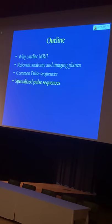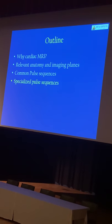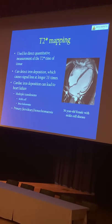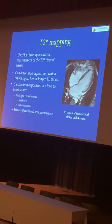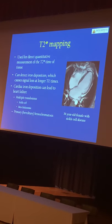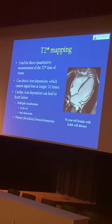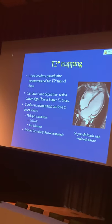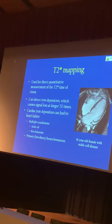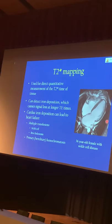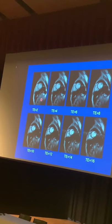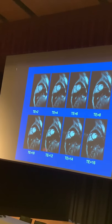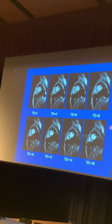For the last bit, we're going to talk about some newer sequences that are more research-oriented, or some that are becoming more mainstream. T2-star mapping is used for direct quantitative measurement of the T2* time of the tissue. It can detect iron deposition, which causes signal loss due to shorter T2* times. Iron deposition can lead to heart failure in patients with multiple transfusions due to sickle cell disease or beta-thalassemia, or in patients with too much iron due to problems with iron metabolism, such as primary hemochromatosis. In this patient with sickle cell disease, just subjectively the heart is not squeezing quite well, and when you do T2* mapping and look at the images going from a low TE to a high TE, the myocardium is getting progressively blacked out due to the presence of iron.